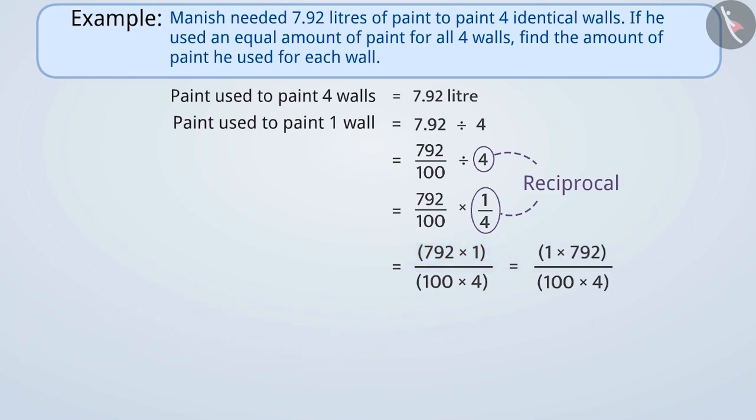1 into 792 by 100 into 4 can also be written as 1 by 100 into 792 by 4. Dividing 792 by 4 will give the result 198, and 1 by 100 into 198 is equal to 1.98.